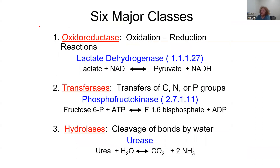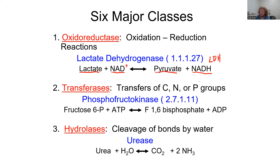The first major category is the oxidoreductases, where an oxidation-reduction reaction takes place — one thing gets oxidized, one thing gets reduced. The example we'll use is lactate dehydrogenase, or LDH, an enzyme that takes lactate and NAD+ (nicotinamide adenine dinucleotide) and produces pyruvate and NADH. One molecule gets oxidized and one gets reduced.